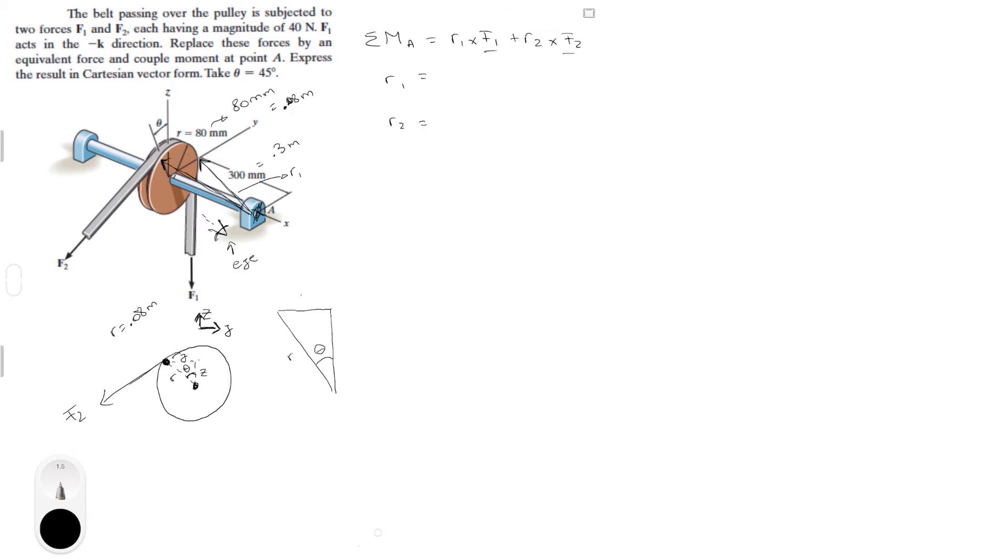This is the Y and this is the Z. The radius equals 0.08 meters. You can find Z and Y with some basic trigonometry. R2Z equals 0.08 cosine of 45 degrees, which equals 0.057 meters. R2Y is going in the negative Y direction, so it's minus 0.08 sine of 45, which equals minus 0.057 meters.